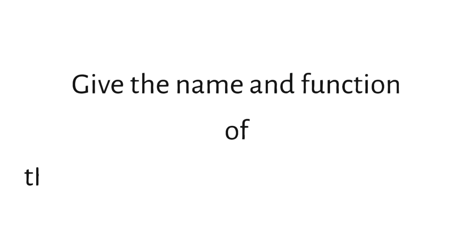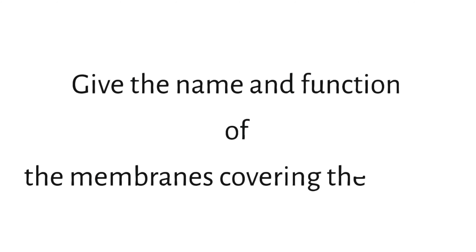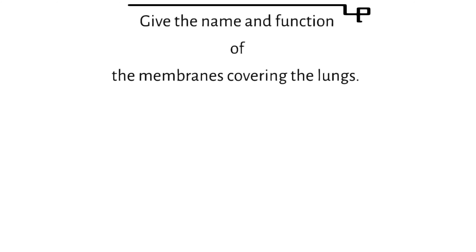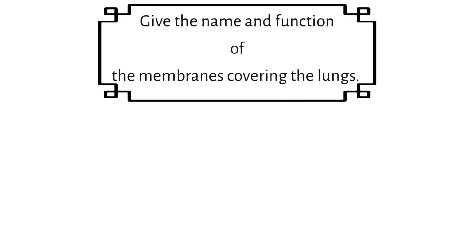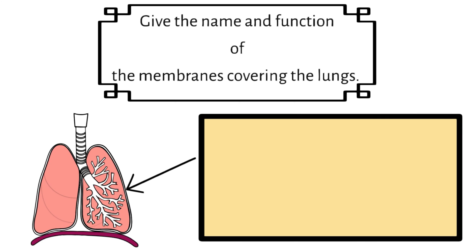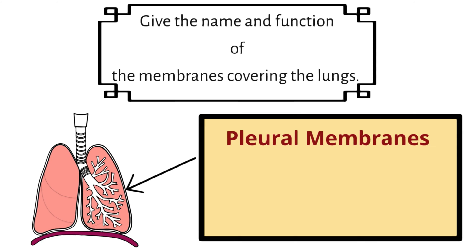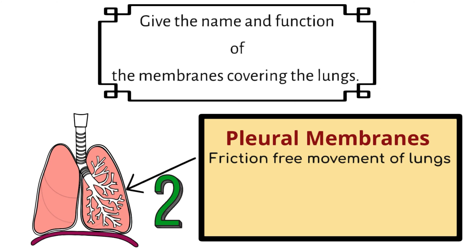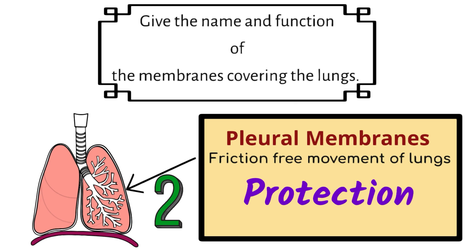Give the name and function of the membranes covering the lungs. The membranes covering the lungs are known as the pleural membranes, and there are two of them. In between each of those membranes, a liquid is secreted and this allows for friction-free movement of the lungs, so these membranes protect the lungs.